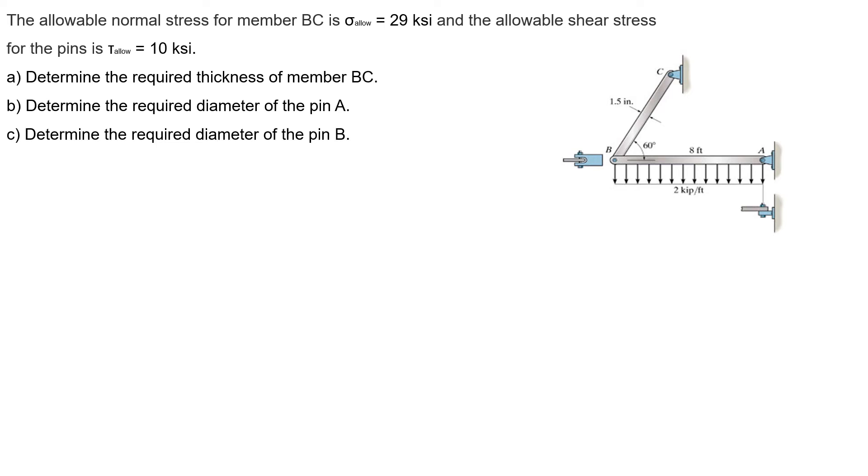Hello guys, this is the third problem from your homework. The allowable normal stress for member BC is sigma equals 29 ksi and the allowable shear stress for the pins is tau equals 10 ksi. So we have three questions: determine the required thickness of member BC, the required diameter of pin A, and the required diameter of pin B.